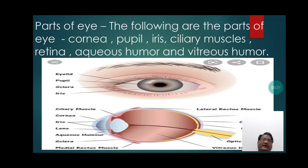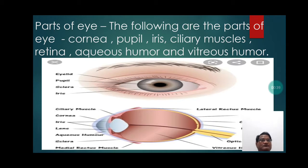Parts of Eye. The following are the parts of eye: Cornea, Pupil, Iris, Ciliary Muscles, Lens, Aqueous Humor, and Vitreous Humor.